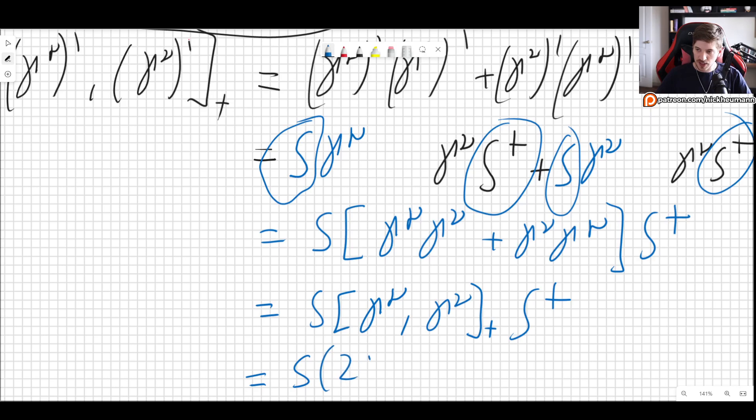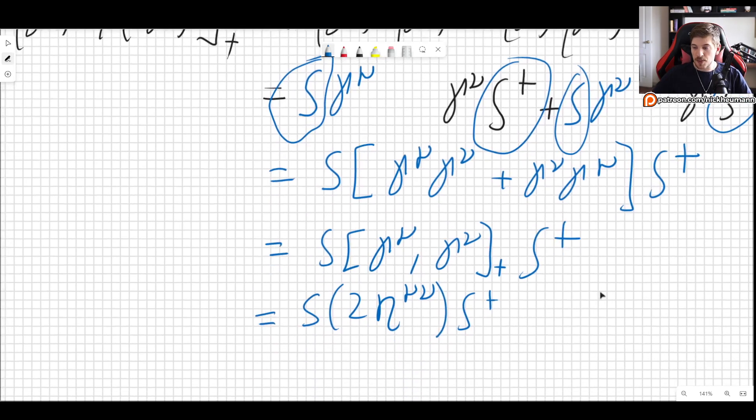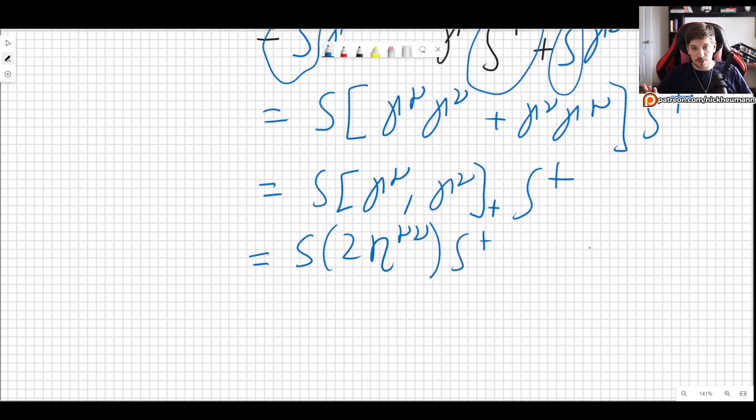This is S times the anticommutator of gamma mu gamma nu times S dagger. And we know what that anticommutator is. It is two times eta mu nu times S dagger. But eta mu nu is a number. It may be zero, one or minus one, depending on what the values of mu and nu are. But it's simply a number. So we can take it out to the front.